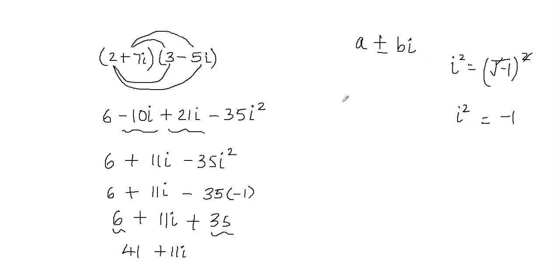So when you write your final product, make sure that you have the real part first. So 41 is my real part, and then 11i is my imaginary part. So you have to make sure that you put the real part first and then the imaginary part.